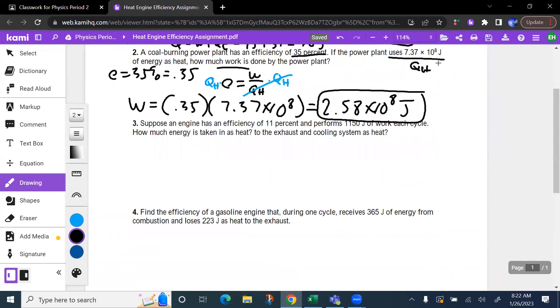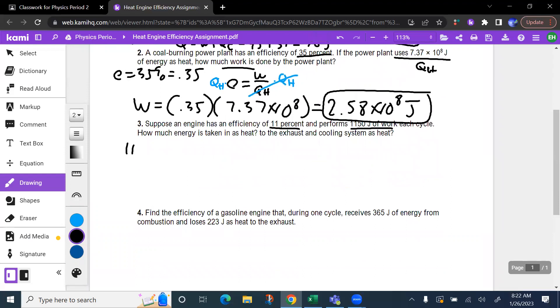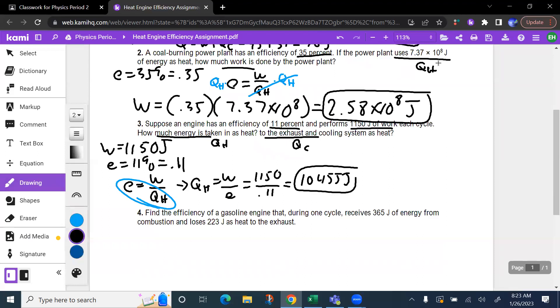Suppose an engine has an efficiency of 11% and performs 1150 joules of work. Remember, write that as a decimal. How much energy is taken in? Qh. How much energy is exhausted? Qc. So it's a two-part problem. The first part I'm looking at is E equals the work divided by Qh. Go ahead and take those two and swap them. And Qh is equal to the work divided by the efficiency. We're going to go 1150 divided by 0.11. And we're going to get about 10,455 joules.